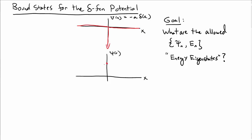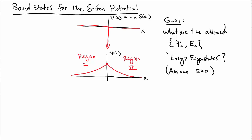We already had some guesses on what this wave function should look like — it should decay as we go out to positive or negative infinity. So we're going to label the region on the left as region 1 and the region on the right as region 2. At the interface between these two, we'll have to worry a little bit about boundary conditions. We are also assuming that the energy is negative so that we have bound states; we can look at positive energy for scattering states a little bit later.